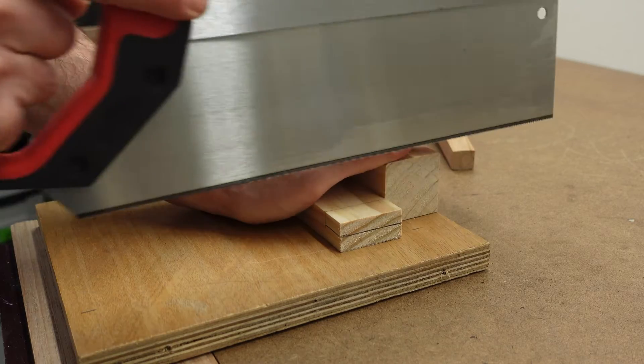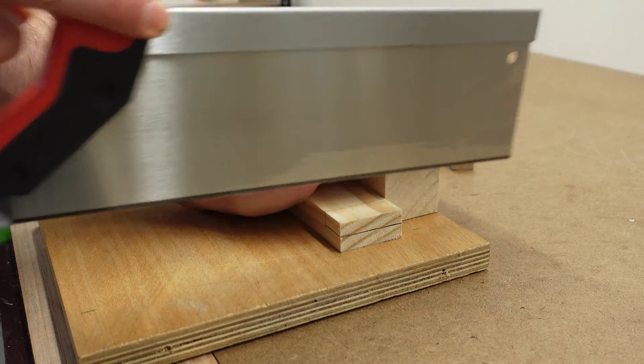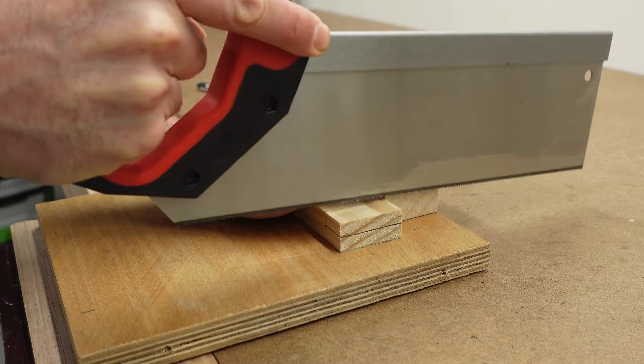Then place the timber in a bench hook. Cut along the waste side of the line. Start slow until the saw wants to cut freely. This can take a few strokes to get going.